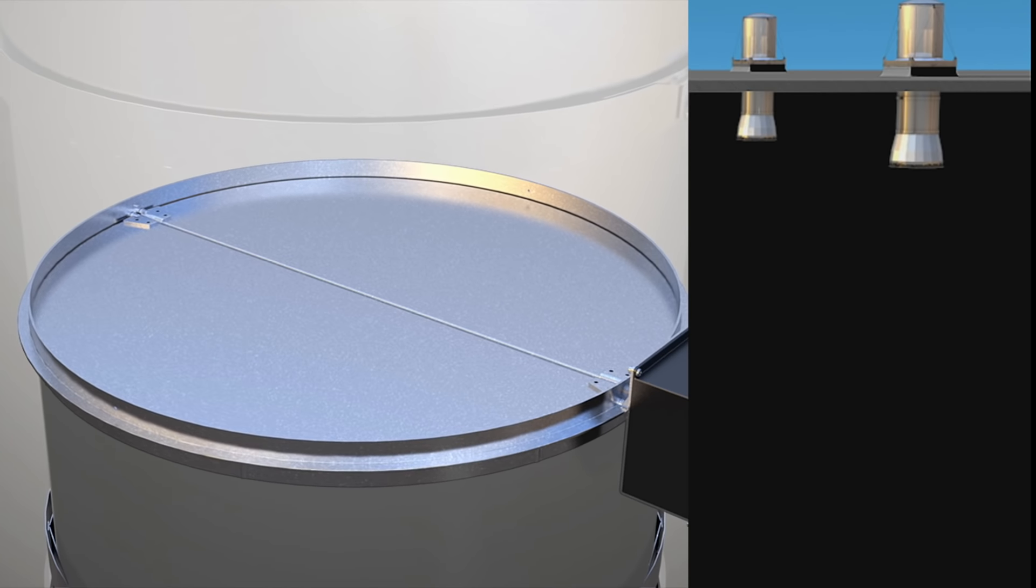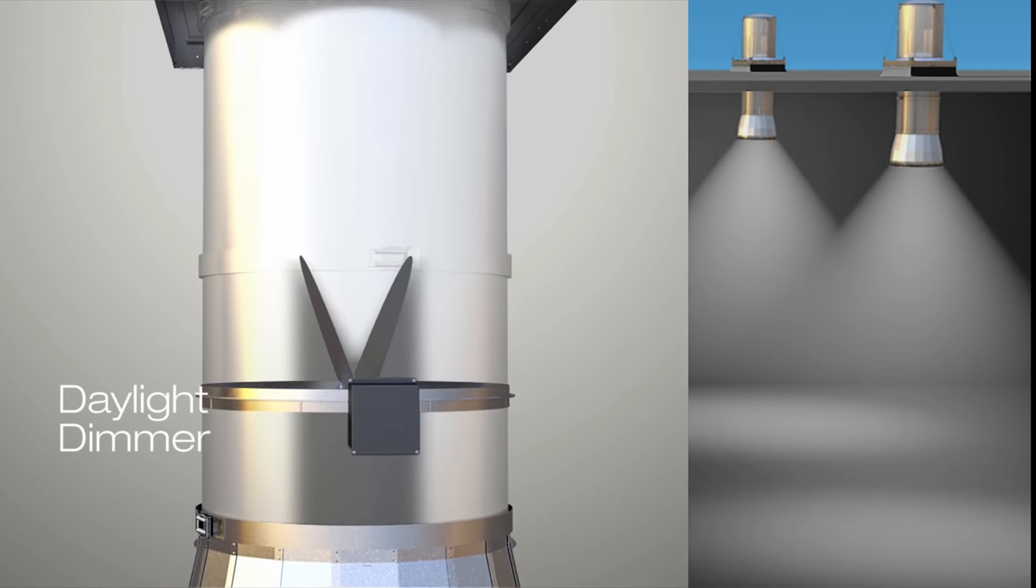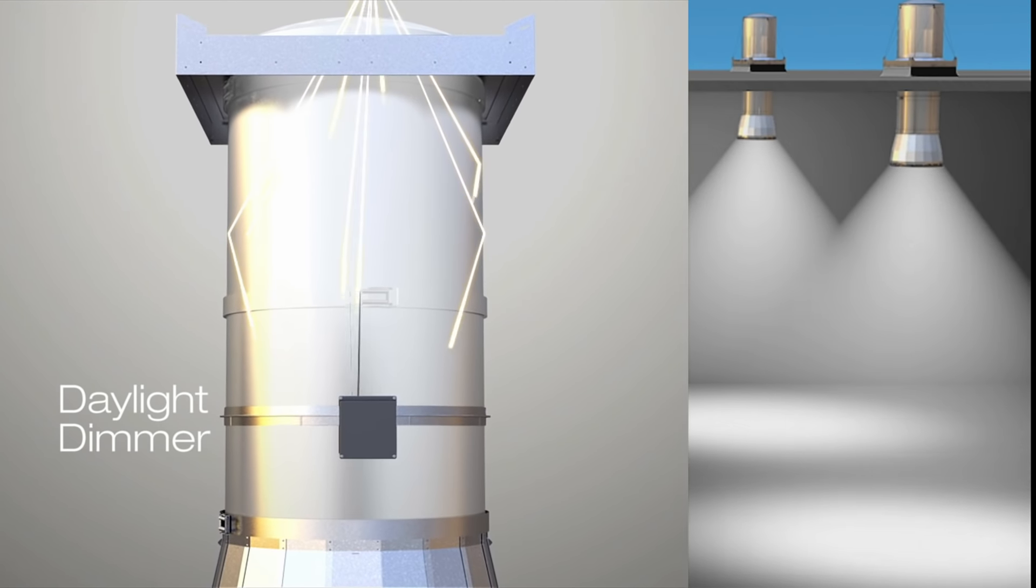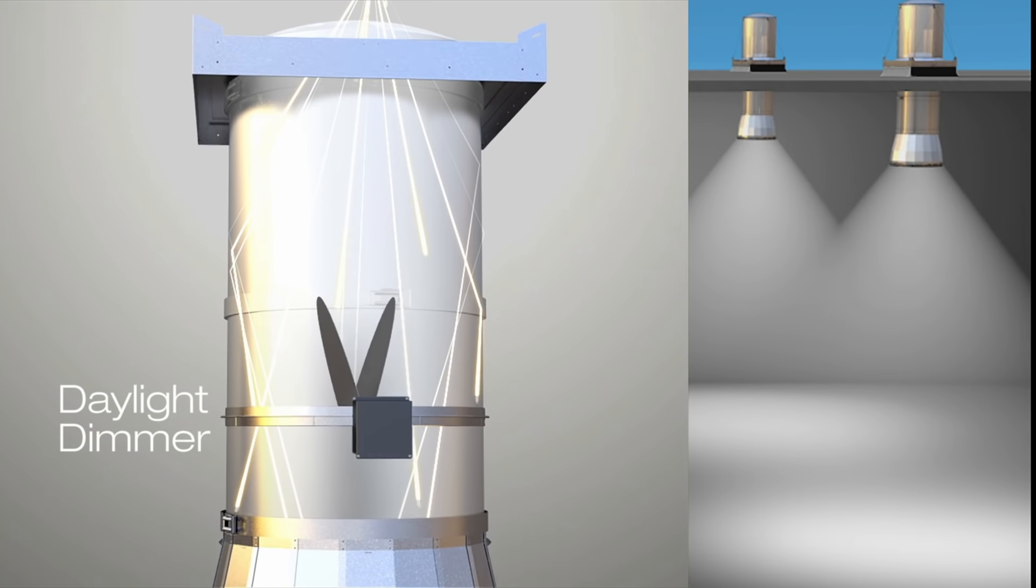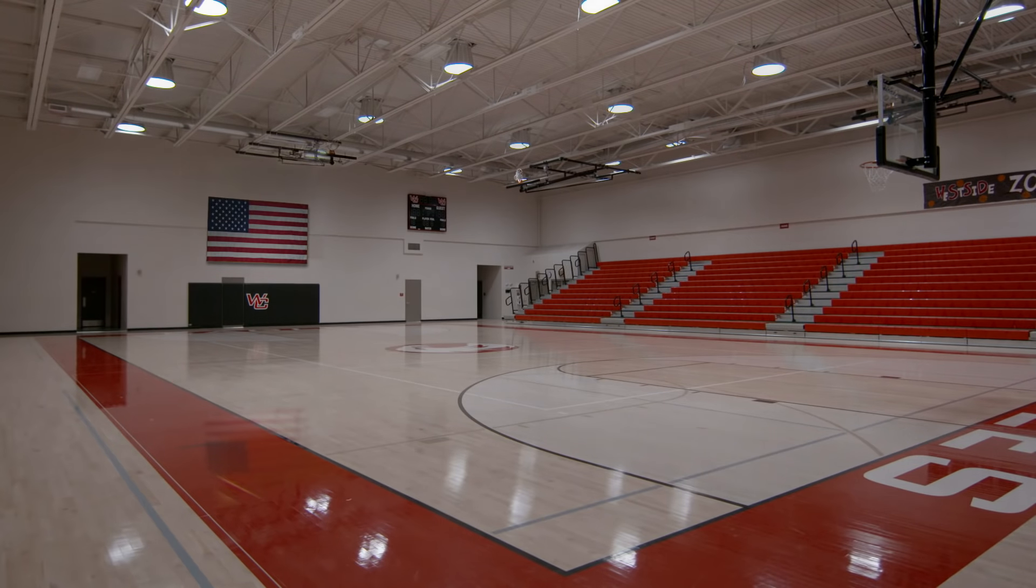To control the delivery of light levels in a space, our optional 0-10 volt daylight dimmer uses a patented butterfly baffle to rapidly move from full bright to almost completely dark and everywhere in between, while ensuring even light distribution in any position.